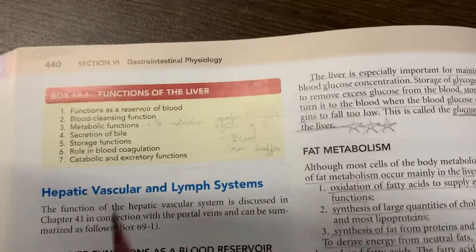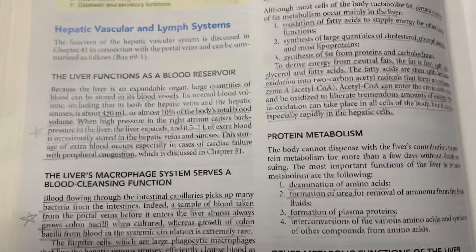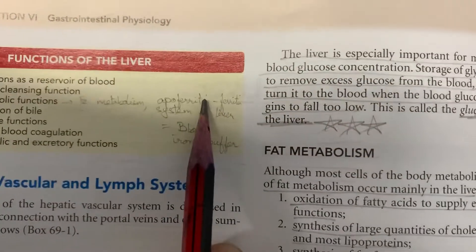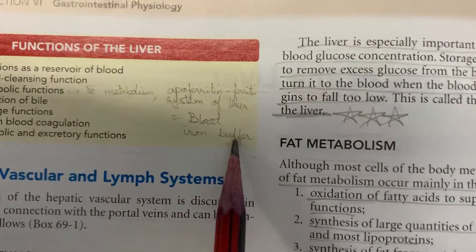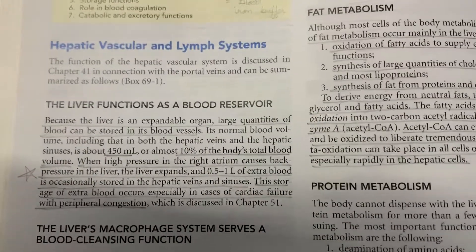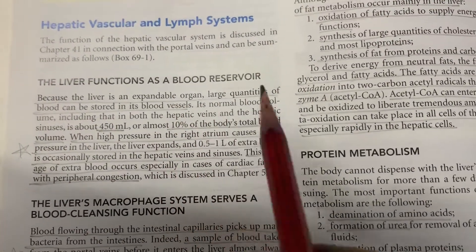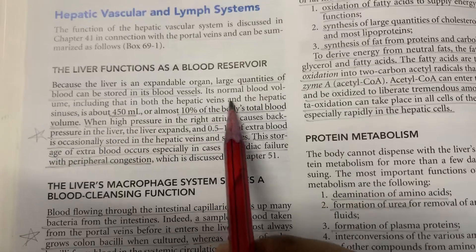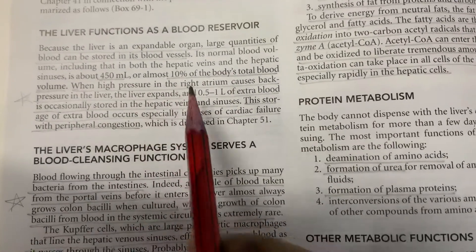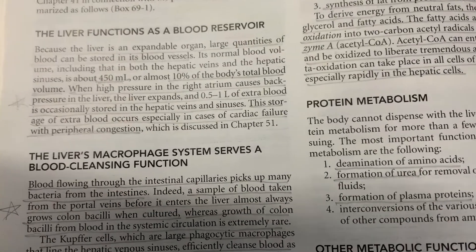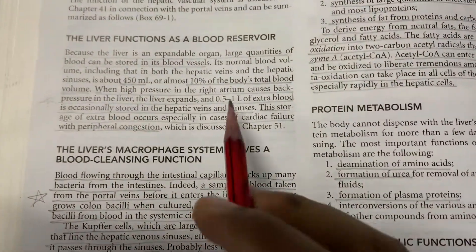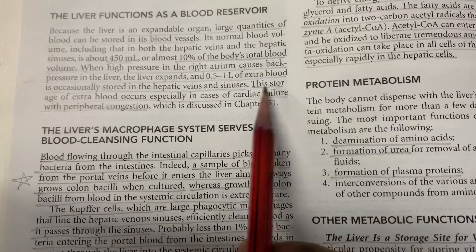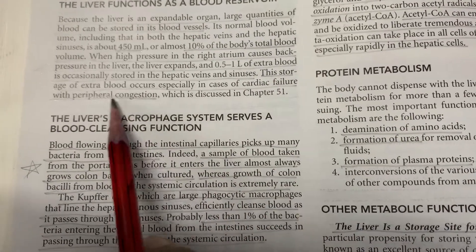The liver has two buffer functions: it acts as a glucose buffer, and the apoferritin system of the liver functions as a blood iron buffer. The liver functions as a blood reservoir because it is an expandable organ and large quantities of blood can be stored in its vessels. The normal blood volume in the liver is 450 ml, approximately 10% of the body's total blood volume. When high pressure in the right atrium causes back pressure in the liver, the liver expands and 0.5 to 1 liter of extra blood is occasionally stored in the hepatic veins and sinuses, especially in cases of cardiac failure with peripheral congestion.